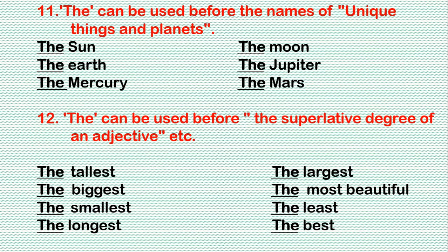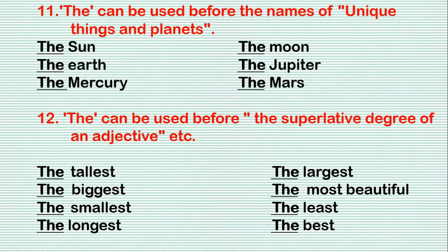Rule 11: 'The' can be used before the names of unique things and planets. For example: the sun, the moon, the earth, the Jupiter, the Mercury, the Mars, etc.